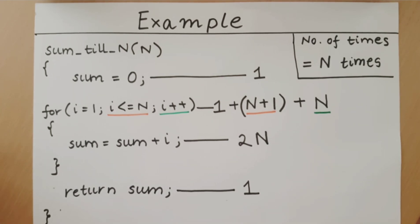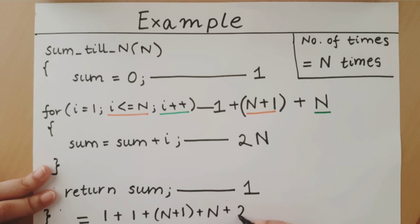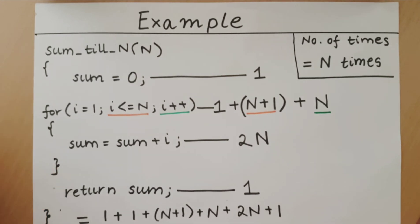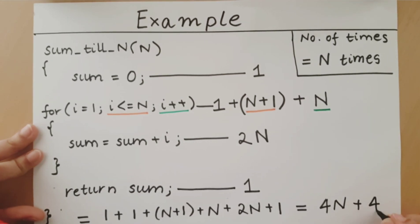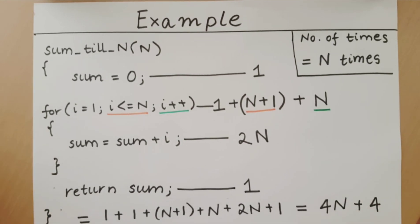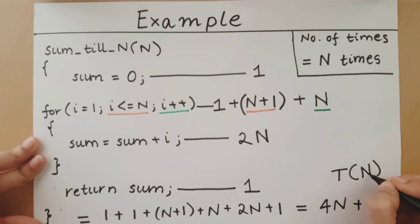Now that we have counted operations throughout this algorithm, let's add it up and see the total time. The total time is equal to 1 + 1 + (n+1) + n + 2n + 1. When we take the sum we arrive at 4n + 4. This is the total time taken by the algorithm in its worst case. So we can say that time is a function of the input size, and in this case T(n) = 4n + 4.